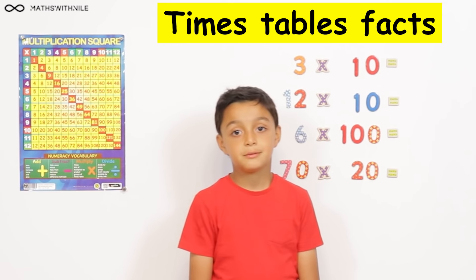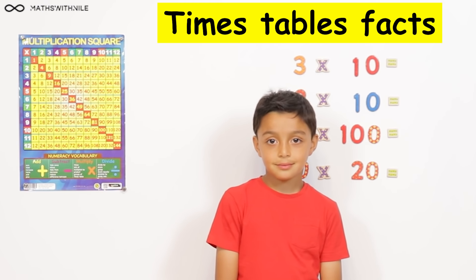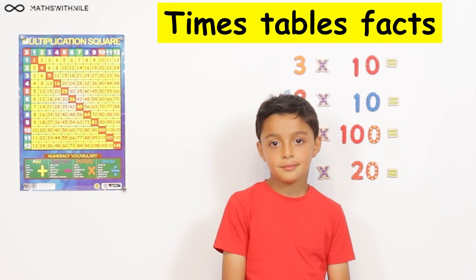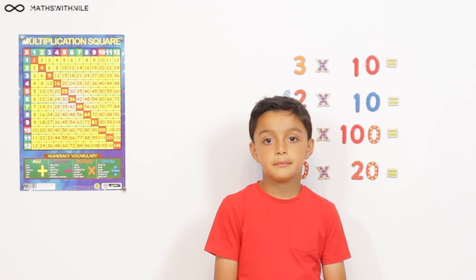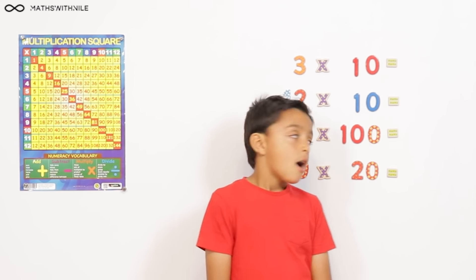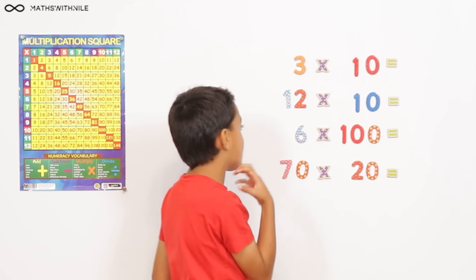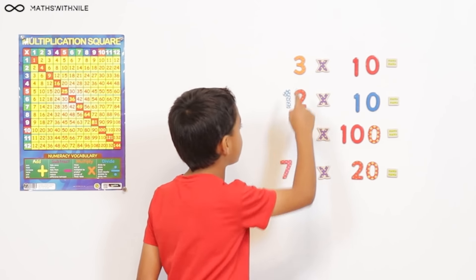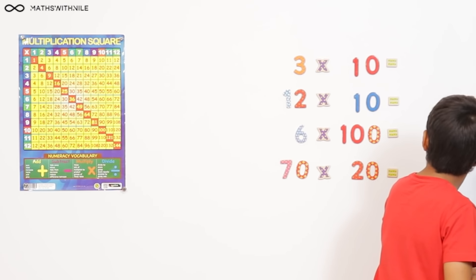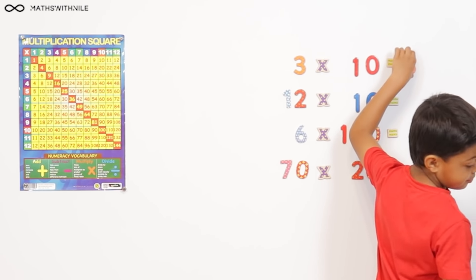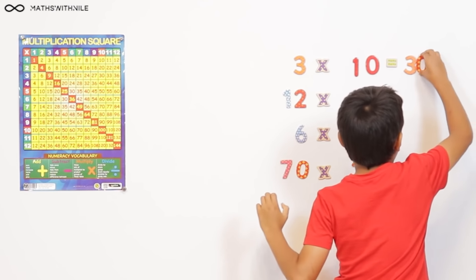Hi Niall, can you tell us what do we do when we multiply a number by 10? We add a zero to the number we're multiplying by 10. Okay, so can you work out the first two questions for us on the board please? So 3 times 10, I said just add a zero to the number, so I would put a 3 and then add a zero to it, so the answer is 30.